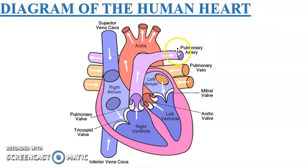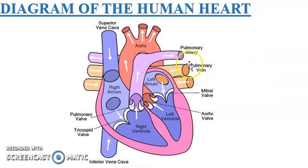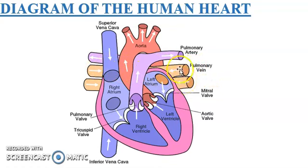The pulmonary artery carries deoxygenated blood from the right ventricle out of the heart to the lungs and other parts of the body. The pulmonary vein carries oxygenated blood from the lungs and sends it into the left atrium. Veins are blood vessels that take blood towards the heart.